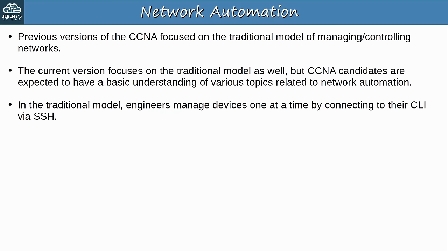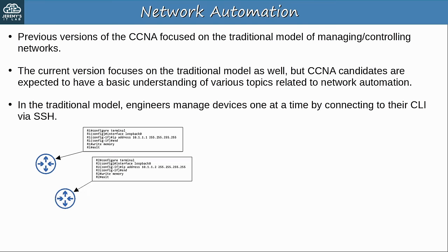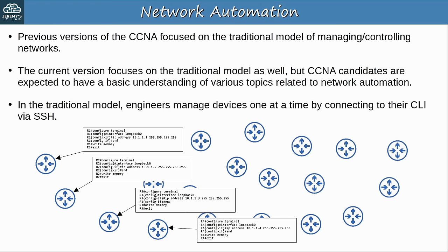For example, let's say your company wants to add a loopback interface to all of their routers. You connect to R1 using SSH, configure the loopback interface, save the config and exit. Then you do it for R2, R3, R4, and every one of the hundreds of routers in your company network. So what are some downsides to managing a network like this?